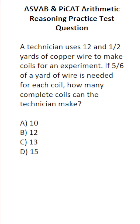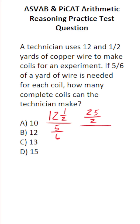This is simply going to be 12.5 divided by 5.6 — that is the length of the copper wire divided by each coil. In order to do this division, we first have to convert 12.5 to be an improper fraction. 12 times 2 is 24, plus 1 is 25, so this is 25 over 2, divided by 5.6.